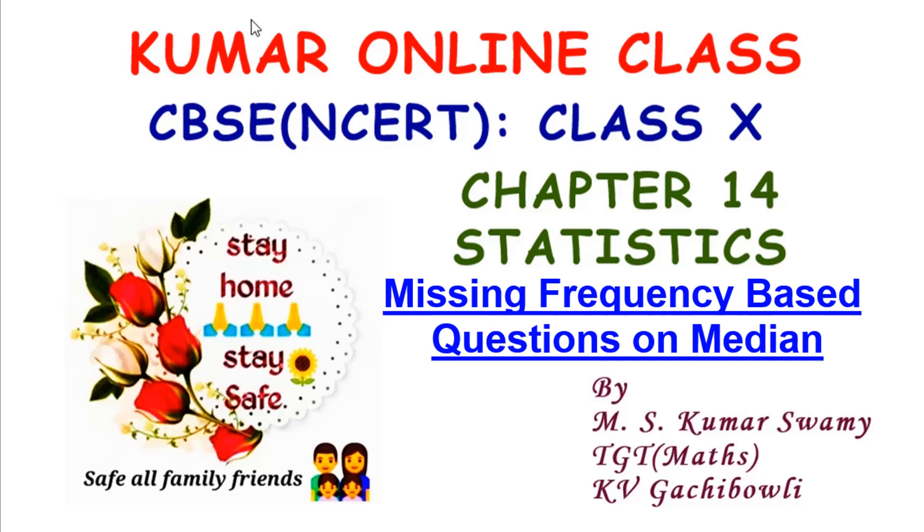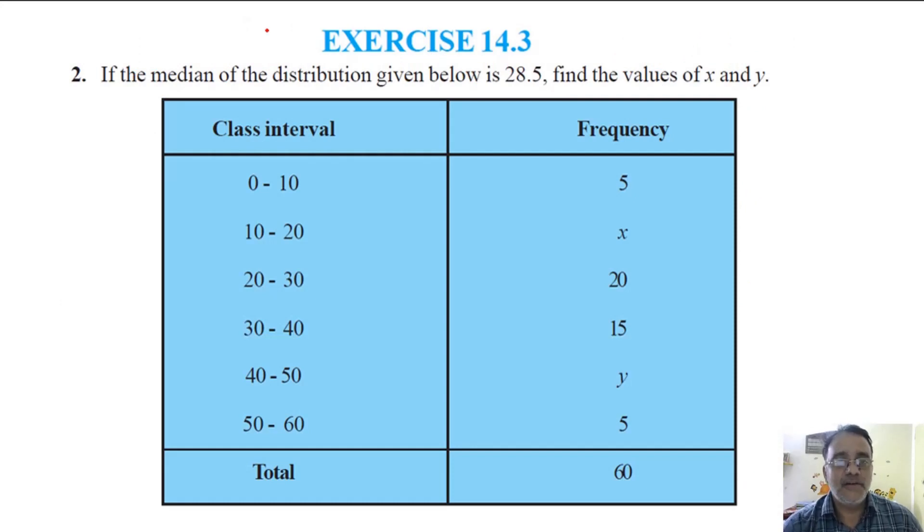Today I am going to start the revision of missing frequency based questions on median from chapter 14 statistics. So let us start with this question: if the median of distribution given below is 28.5, find the value of x and y. So which is the median class? This is the median class. Whenever a missing frequency question based on median is given, if median is given, with the help of that value only you have to identify the median class.